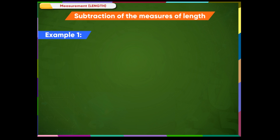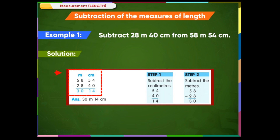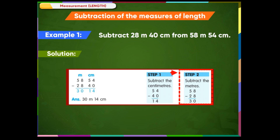Subtraction of measures of length. Subtract 28 m 40 cm from 58 m 54 cm. Place the numbers in columns. Step 1: Subtract the centimeters — 54 − 40 = 14 cm. Step 2: Subtract the meters — 58 − 28 = 30 m. The answer is 30 m 14 cm.